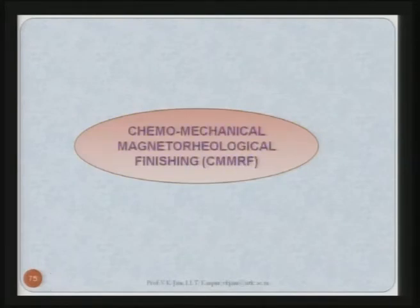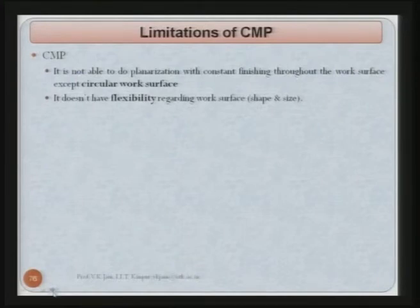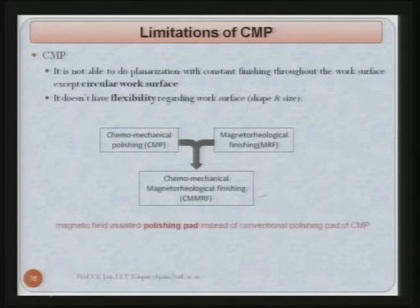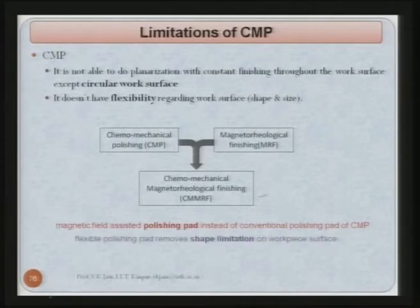I will quickly go through the chemo-mechanical magnetorheological finishing process, which was developed at IIT Kanpur. Limitations of the chemo-mechanical polishing process include inability to do planarization with constant finishing throughout the work surface except on circular surfaces, and no flexibility regarding work surface shape and size. So we combined the chemo-mechanical polishing process with the magnetorheological finishing process to develop the chemo-mechanical magnetorheological finishing process. Here, a magnetic-field-assisted polishing pad replaces the conventional polishing pad; its flexible polishing pad removes the shape limitation and because of the magnetic field it becomes deterministic — you can control the forces.